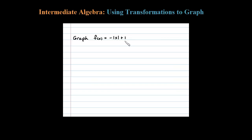We're asked to graph an absolute value function. The first step is to identify the basic graph, which in this case is the absolute value of x.